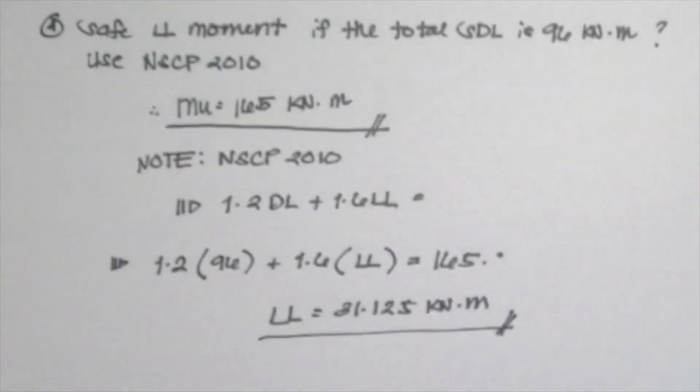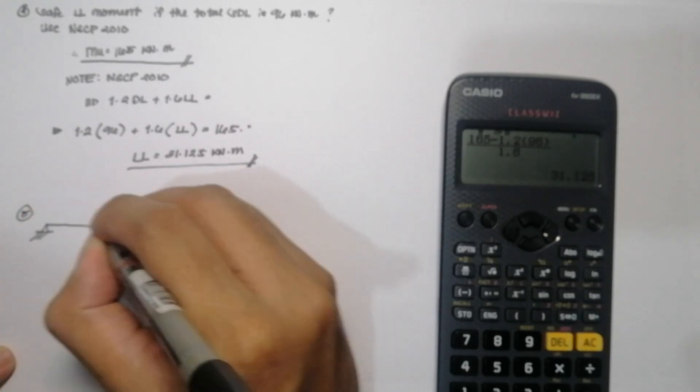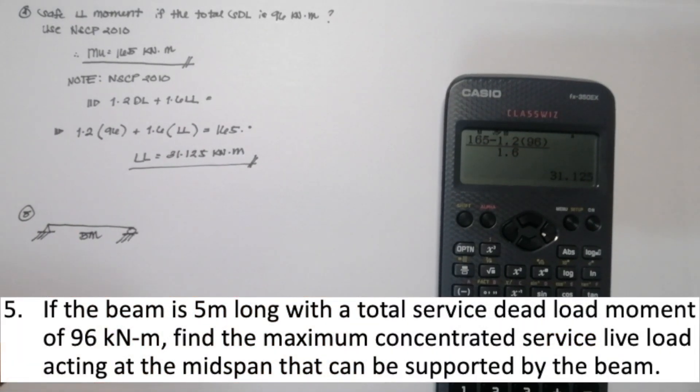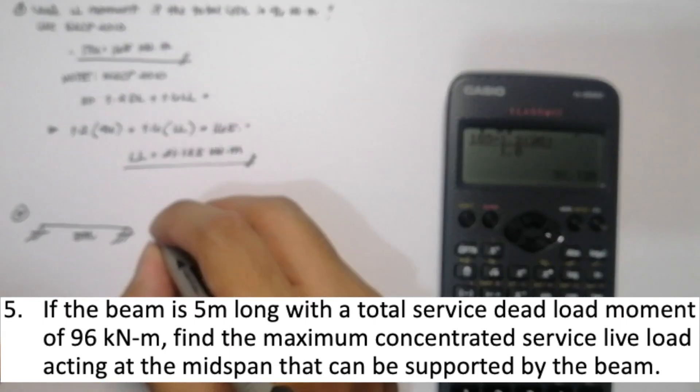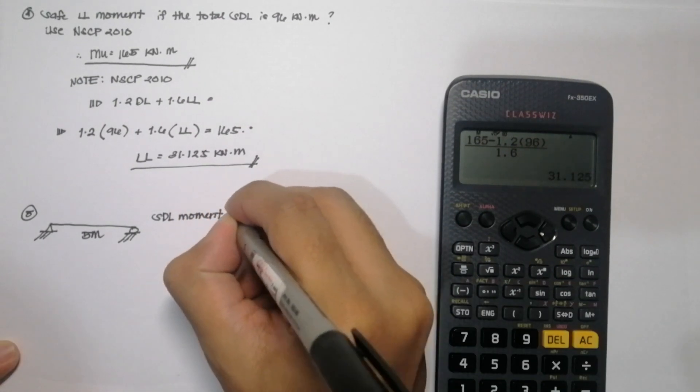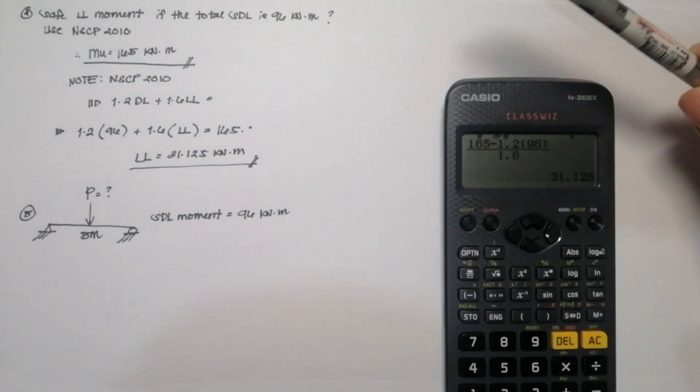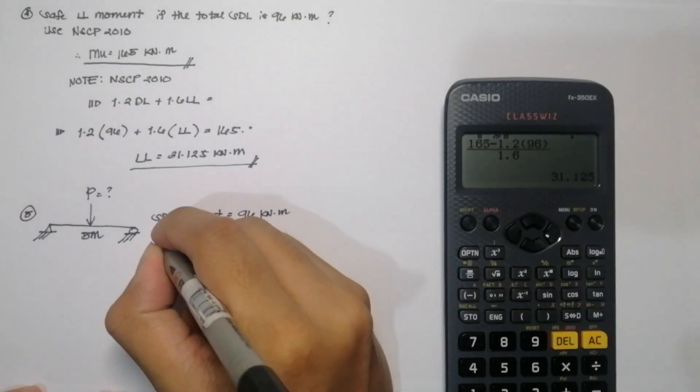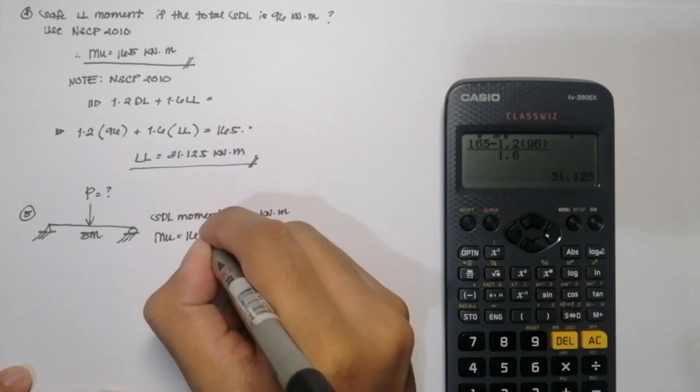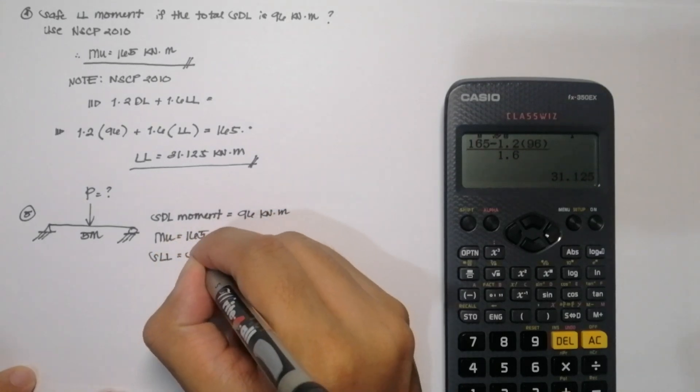For the fifth and final question in this problem, the case is that if the beam is 5 meters long with a total service dead load moment of 96 kilonewton meter, find the maximum concentrated service live load acting at the mid-span that can be supported by the beam. So in here, I made a drawing so that we can easily analyze what is the hour given. So our concentrated load P is located at mid-span. We have a service dead load moment of 96 and an ultimate moment capacity of 165 from our previous solution and a safe service live load of 31.125 kilonewton meter.